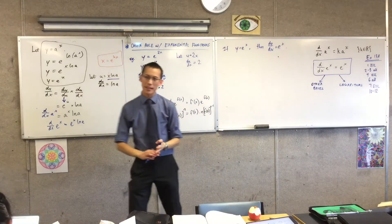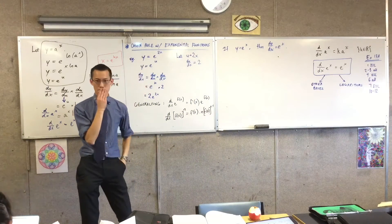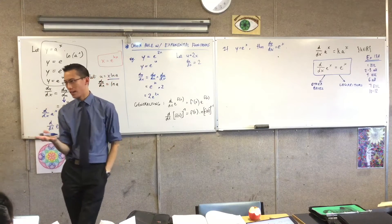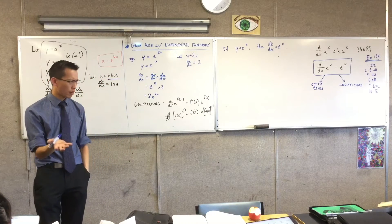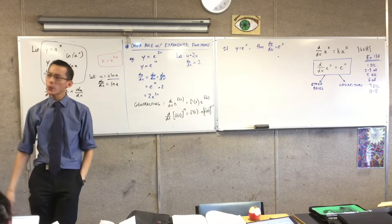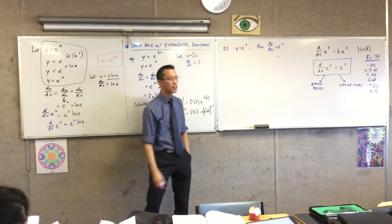Now what am I going to do with them and how am I going to get them to logs? You can see y equals e to the x is actually a log statement in disguise. Agreed? Every exponential statement is a log statement in disguise. How would I rewrite it if it were a log equation?